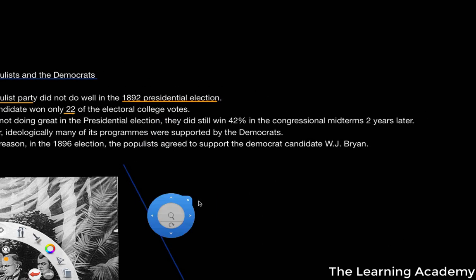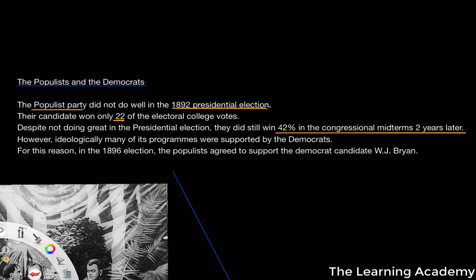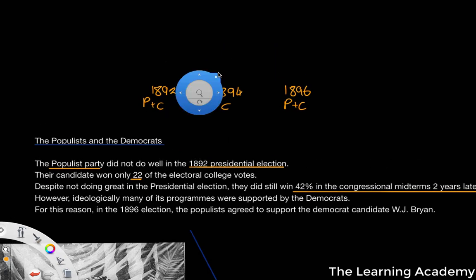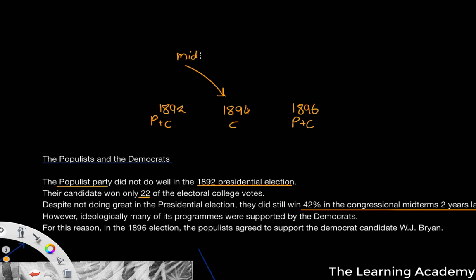Despite not doing great in the presidential election, they still did win 42% in the congressional midterms two years later. As you remember, you have presidential elections every four years and every two years you have congressional midterms. So there was an election for the president in 1892, then in 1894 there was a congressional midterm election — midterm just refers to the congressional election between the presidential elections. So you have 1892, then 1894 midterms, then 1896 presidential election, and the one in the middle is referred to as the midterm election.